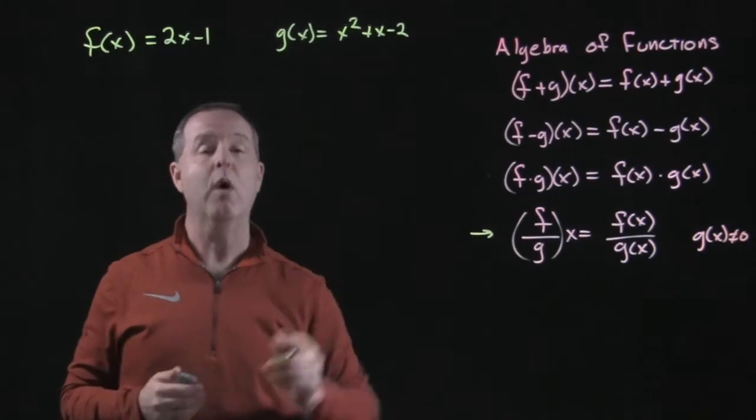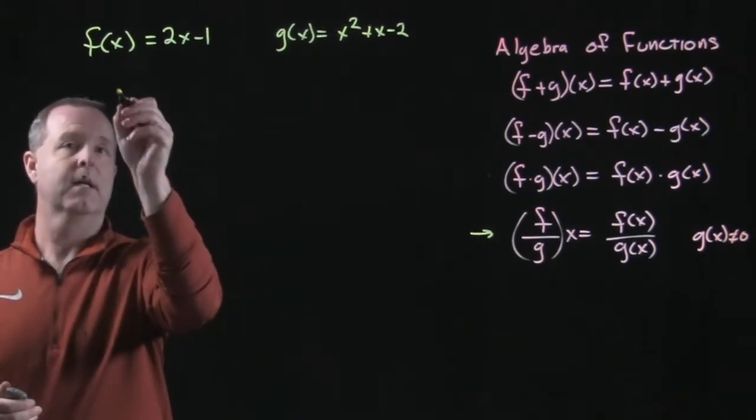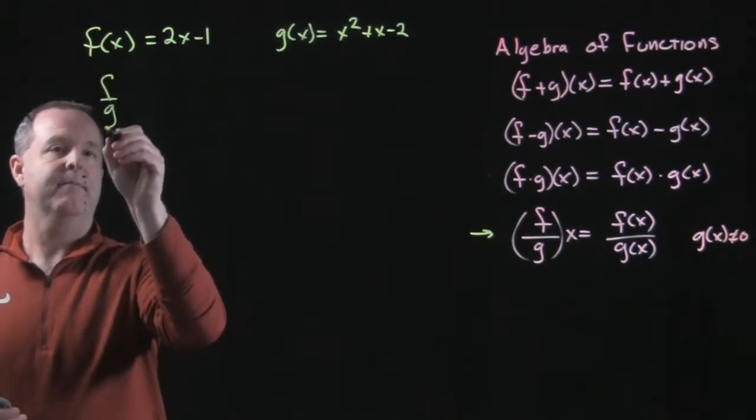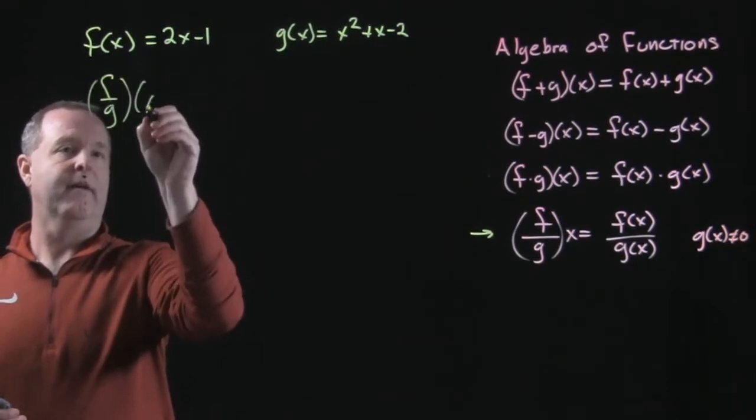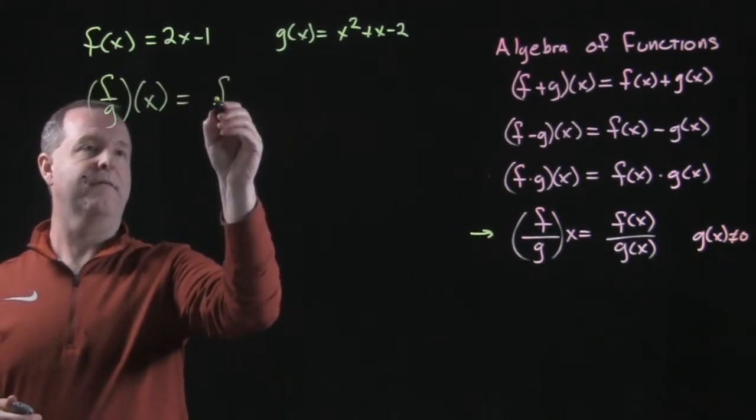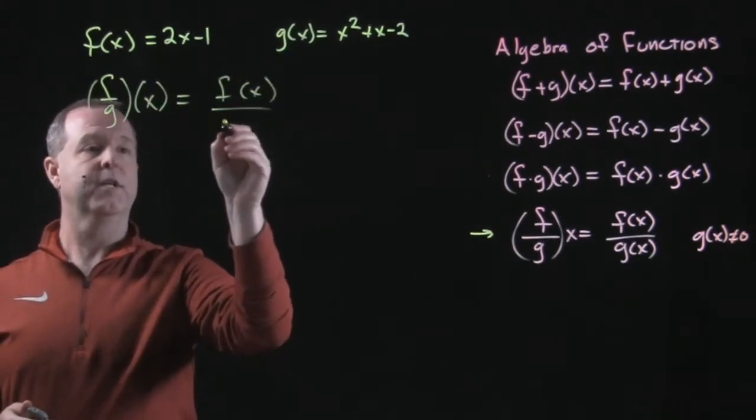And finally, we have a quotient of two functions such that f divided by g of x equals f of x over g of x.